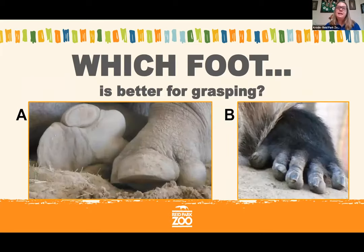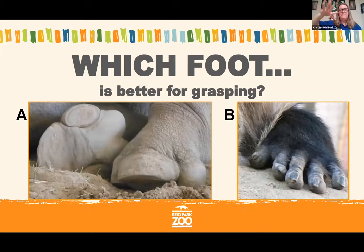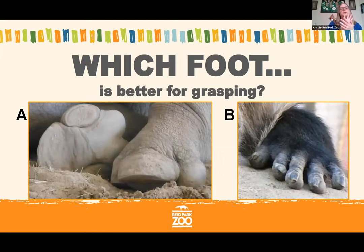Which foot do you think is better for grasping — the rhino foot on the left, letter A, or the macaque foot on the right, letter B? I see a lot of B's — absolutely! Those long fingers with an opposable thumb help the macaque grasp. The rhino foot on the left looks similar to an elephant foot; it has nice cushioning so rhinos are excellent at running, but not so good at grabbing onto things.